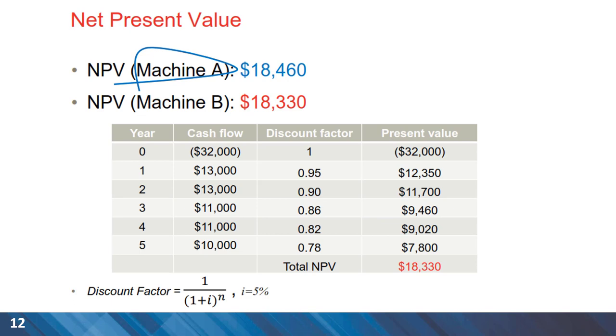The same calculations can be done for Machine B, and the net present value of $18,330 has been calculated. Based on NPV, Machine A has a larger net present value and therefore is the alternative of choice. Again, using different financial analysis can result in different results.